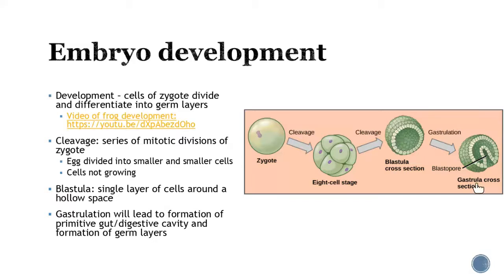The blastula has a hollow space in it, and then the next step — called gastrulation — begins. What gastrulation does is cause an enfolding to happen, and this is the beginning of the digestive system. Depending on whether you are a protostome or deuterostome, either your mouth or your anus is going to develop first.